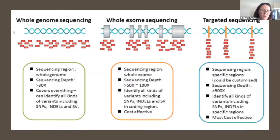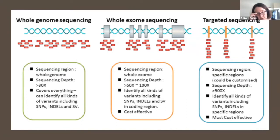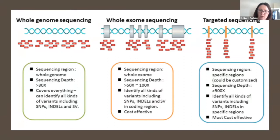Whole genome sequencing examines both coding and non-coding regions of the whole genome, typically done at a relatively low sequencing depth to cover everything. It identifies both structural changes — trisomies and deletions — as well as single nucleotide changes and small insertions and deletions. Whole exome sequencing covers just the coding regions. Targeted sequencing identifies regions of interest in advance and applies sequencing coverage only to those regions. There is usually a cost tradeoff — getting the most useful information at a cost that is deliverable in a clinical context.